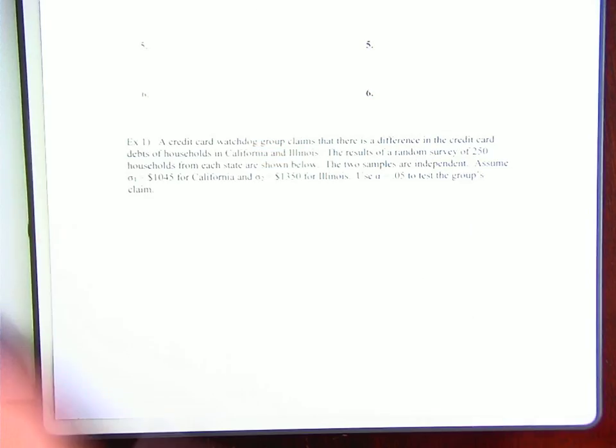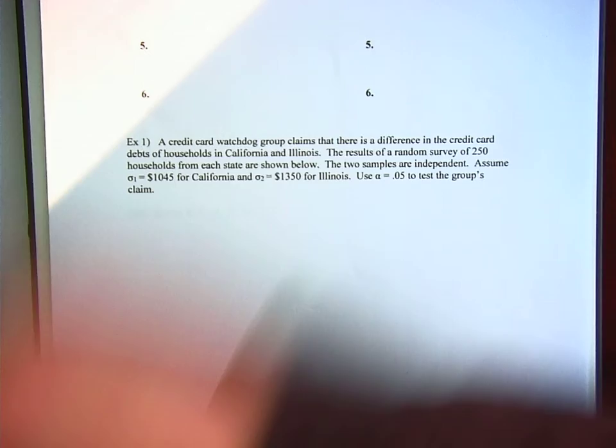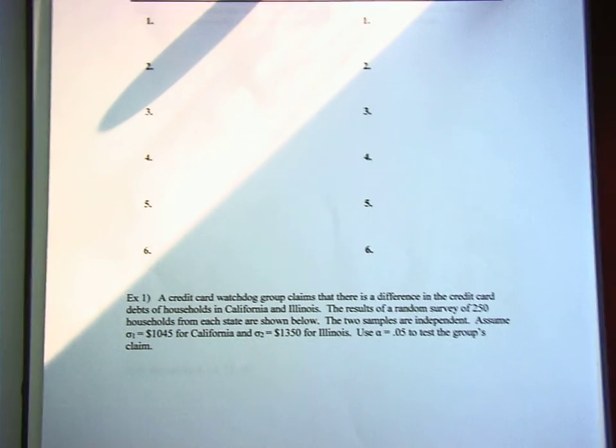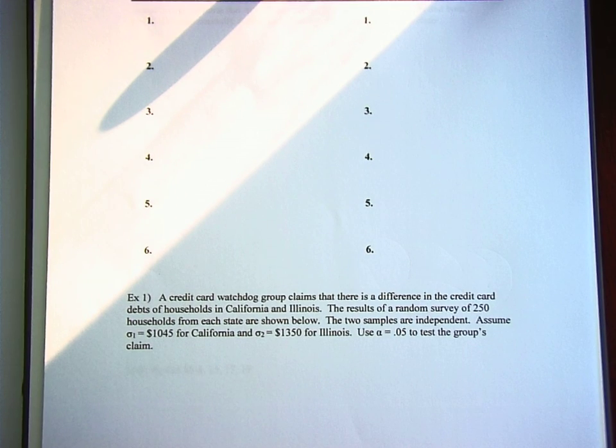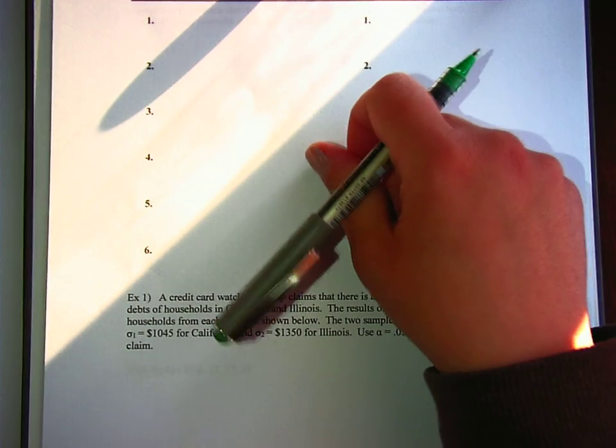Okay, now once we get into two-sample hypothesis testing, that means you're actually comparing populations, which is usually what is done with hypothesis testing in real life. You're often comparing two different populations with each other, trying to see if there's a change. This is used in scientific studies a lot.